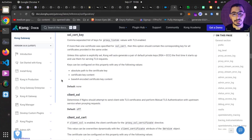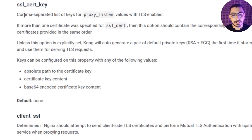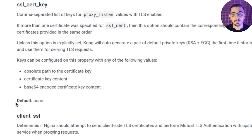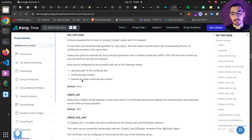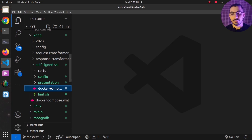As you can see in the documentation, I can pass my SSL certificate files in a comma-separated list of keys, which can be the absolute path for the certificate files, the certificate content, or base64-encoded content. We need to pass two different configurations — one for the key and one for the certificate file.